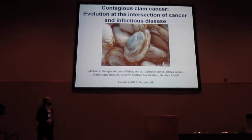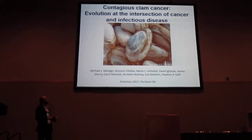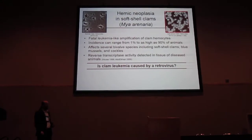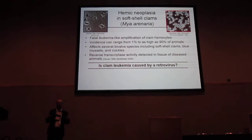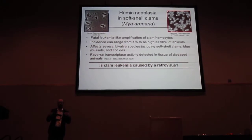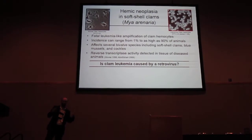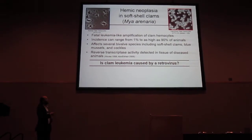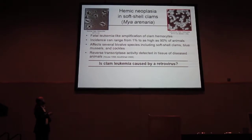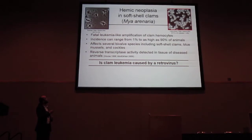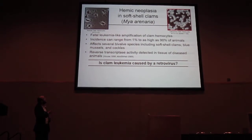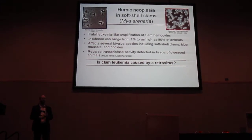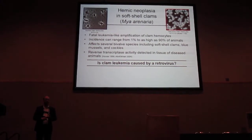First, I want to introduce the model organism we're primarily talking about here: soft-shell clams, or Mya arenaria. We got into this because of a cancer in soft-shell clams. There's a fatal leukemia-like amplification of clam hemocytes called hemic neoplasia, or disseminated neoplasia.